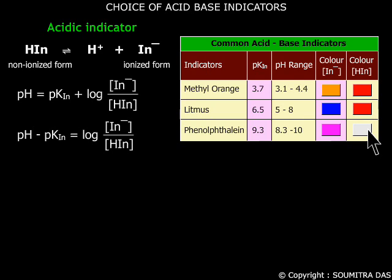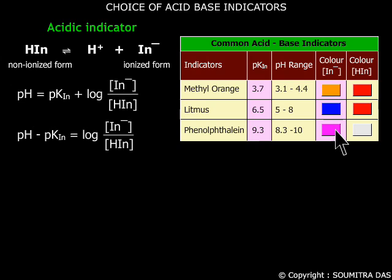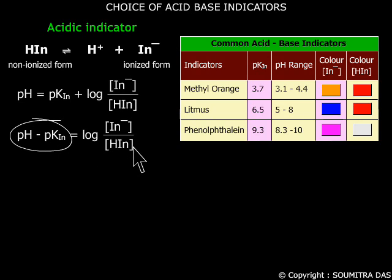In basic medium the concentration of H+ ions is less, and the equilibrium shifts to the right and the color of the ionized form predominates. This can also be understood from this equation. In acidic medium, pH is less than pK(indicator), so this becomes less than zero and the non-ionized form predominates.